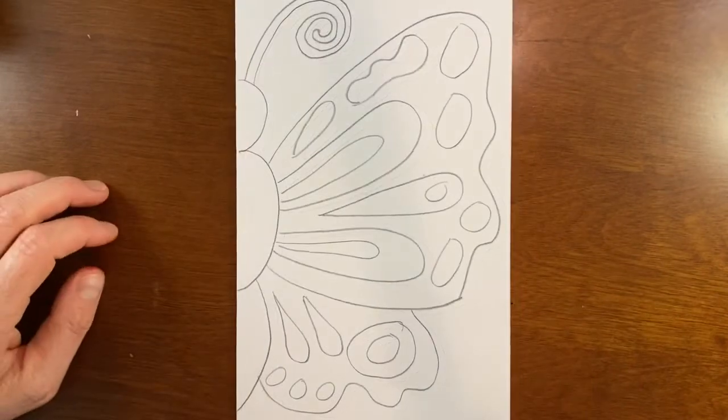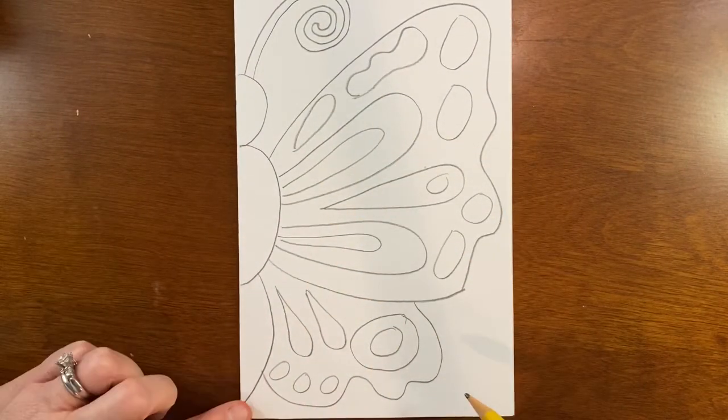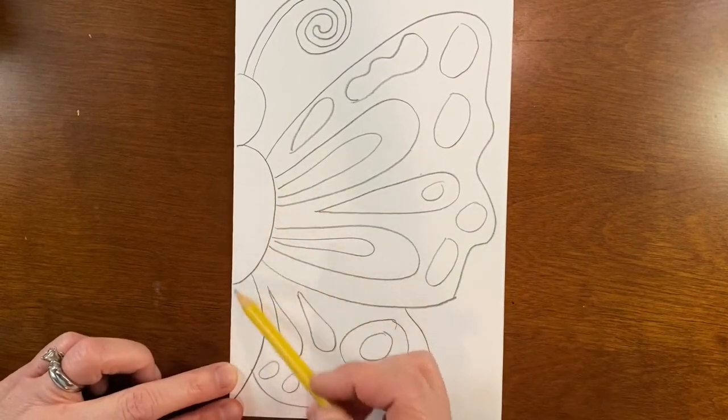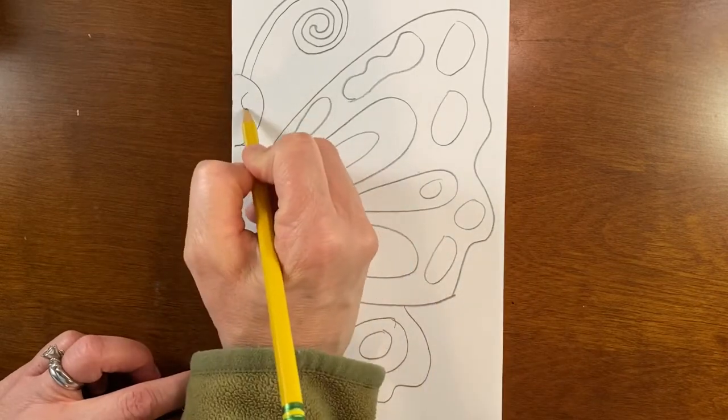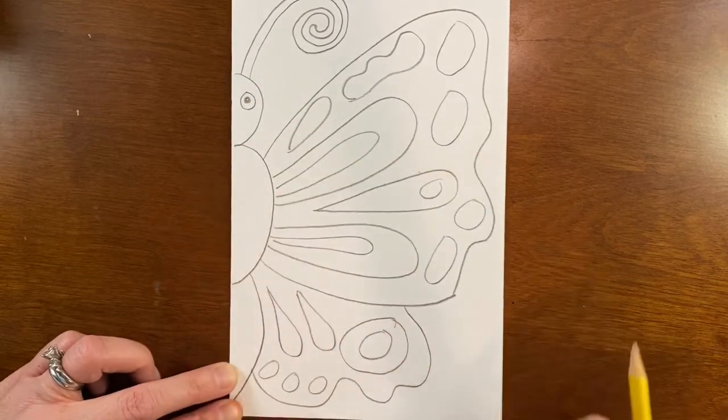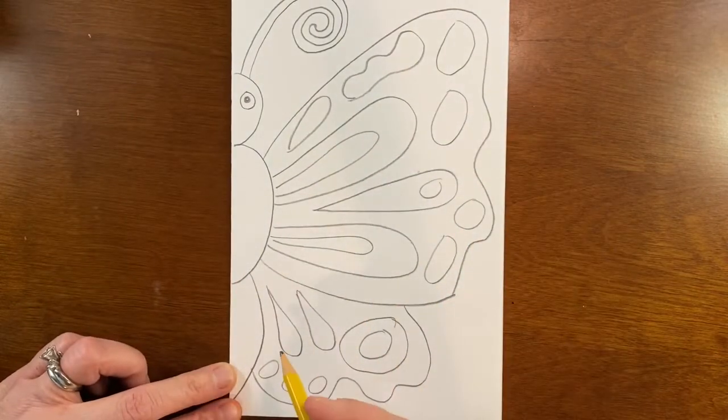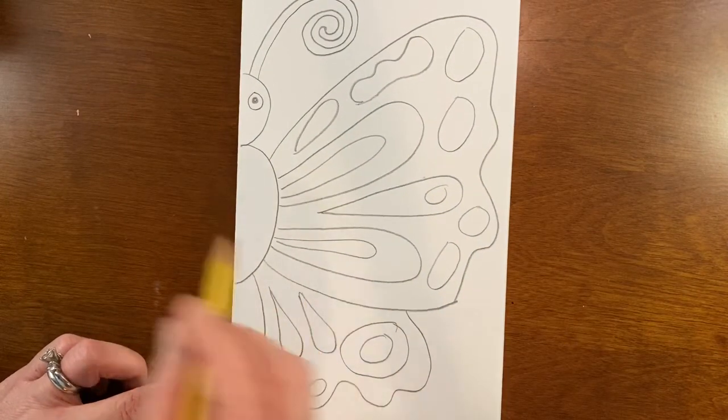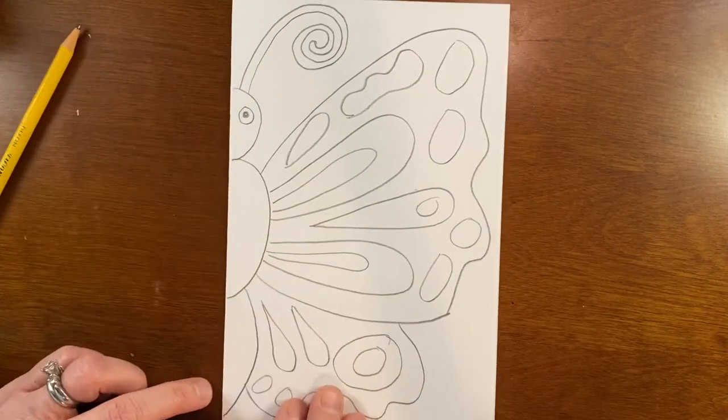So I have filled up both my wings with some shapes. If you want things on the body you could do that. If you're going to do an eye, just do one eye because remember we're just doing half of our butterfly. And then next we are going to get our sharpie.